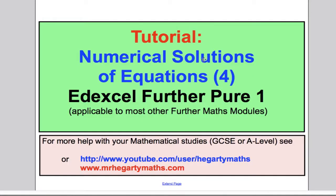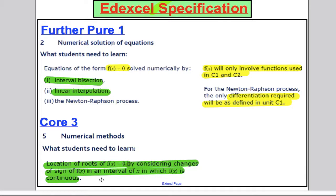For the Edexcel Further Pure One Maths A Level Syllabus, this is the fourth video for Numerical Solutions of Equations. Looking at the scheme of work, we've talked about the change of sign theorem, the interval bisection method and linear interpolation method. In this video we're going to finish off by talking about the Newton-Raphson process. The functions will only be functions you've met in C1 and C2, and the differentiation you're going to need will only be the differentiation you needed in C1.